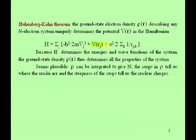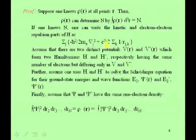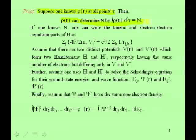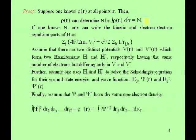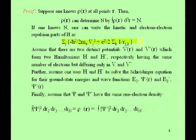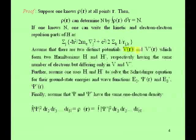Once you know how many cusps there are and their sharpness, you know the nuclear charges, and you would know the Hamiltonian. So rho has determined the Hamiltonian. That was a plausibility argument. The mathematical, variational proof of the Hohenberg-Kohn theorem goes as follows. Suppose we knew an electron density rho(R) at all points. The integral of rho(R) d³r gives N, so we know how many electrons are in the problem, and we can write down the kinetic energy and electron-electron repulsion parts.